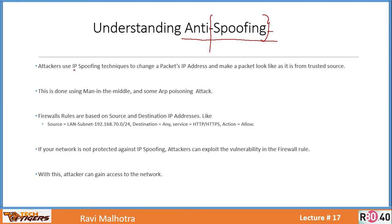Attackers basically use IP spoofing technique to change a packet's IP address and make a packet look like it is from a trusted source. That's a very important line. Attackers use IP spoofing technique to change a packet's IP address — that is the main job of spoofing. But why do they want to change an IP address of a packet?